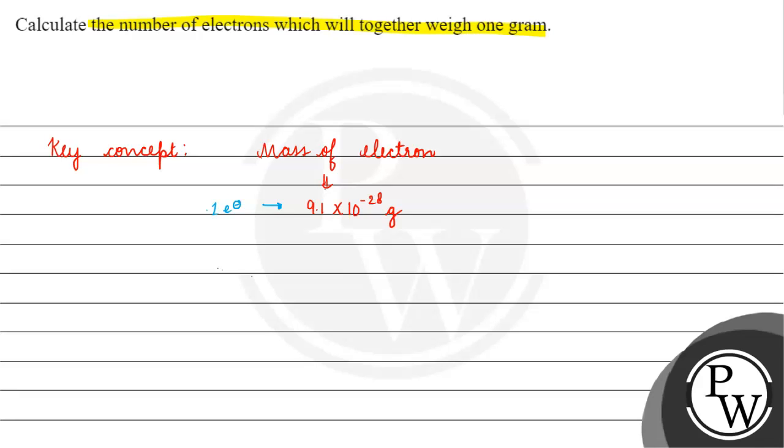In 1 gram, how many electrons will there be? It will be 1 upon 9.1 into 10 to the power minus 28. Right? 1 upon 9.1 into 10 to the power minus 28.